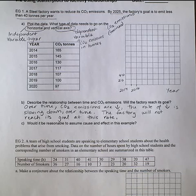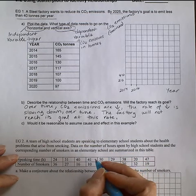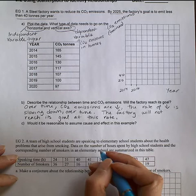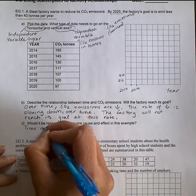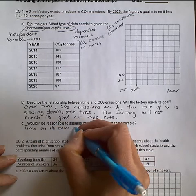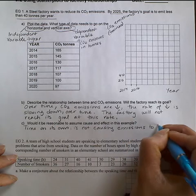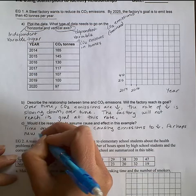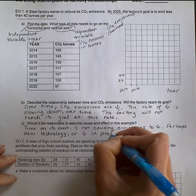Sorry, the factory will not reach its goal at this rate. C, would it be reasonable to assume cause and effect in this example? Well, time alone is not going to cause the decrease in emissions. However, the factory might be using new technology, or maybe has decreased production, and maybe that's why carbon dioxide emissions are decreasing. So the cause is not time passing, which is resulting in the emissions. So in that case, it would not be reasonable. So time on its own is not causing emissions to decrease. Perhaps new technology, or a decrease in production, is the cause.